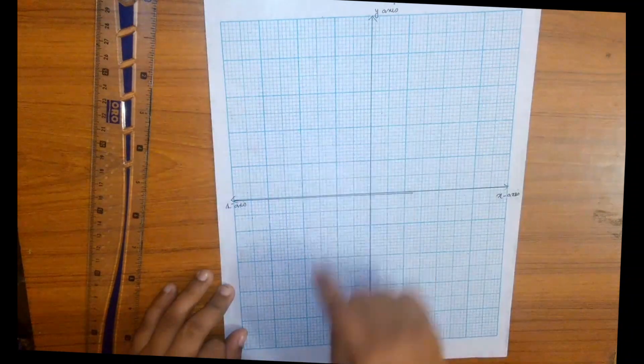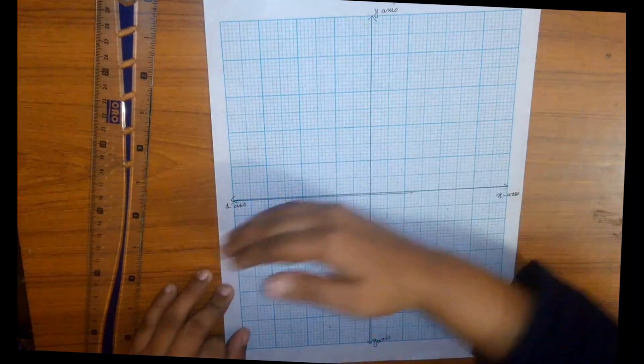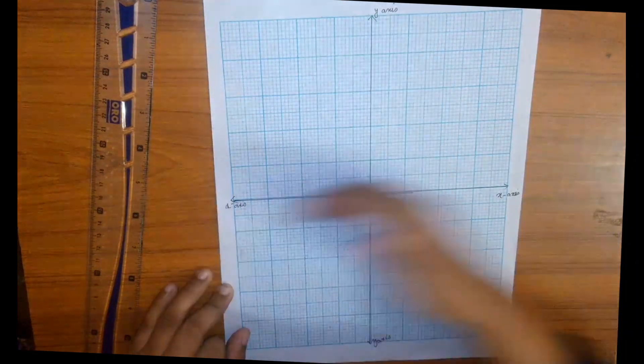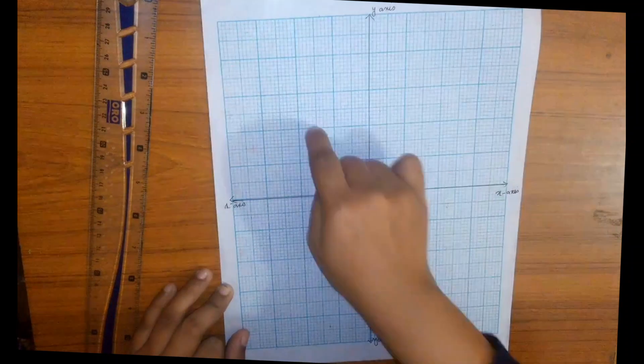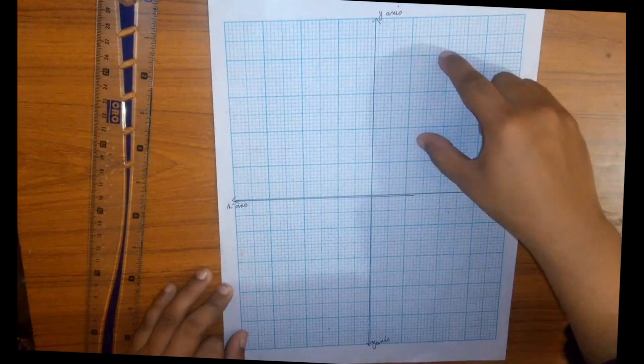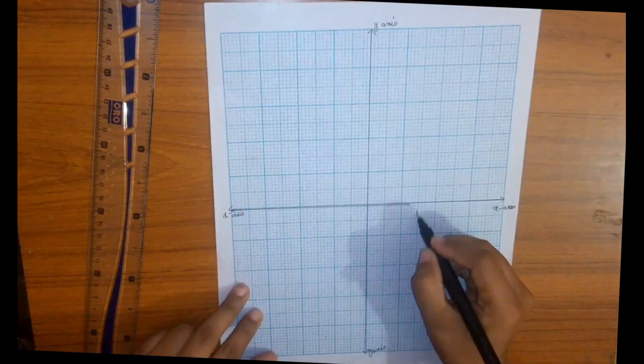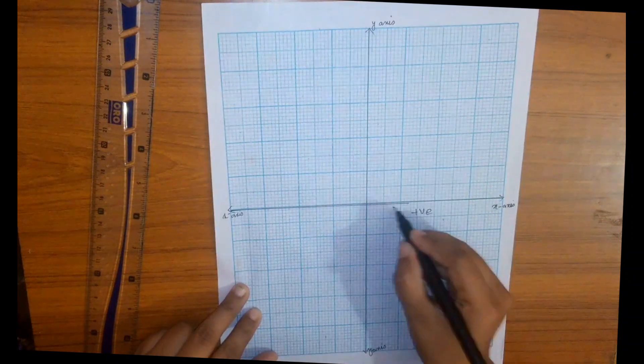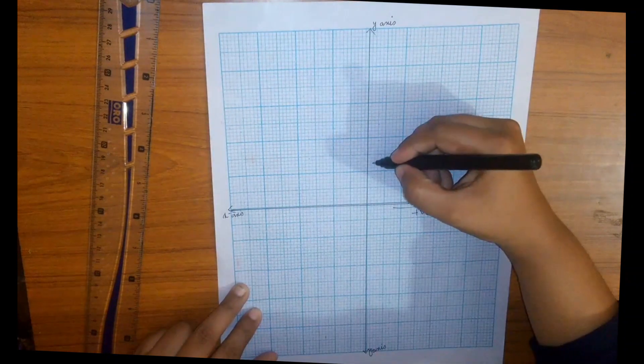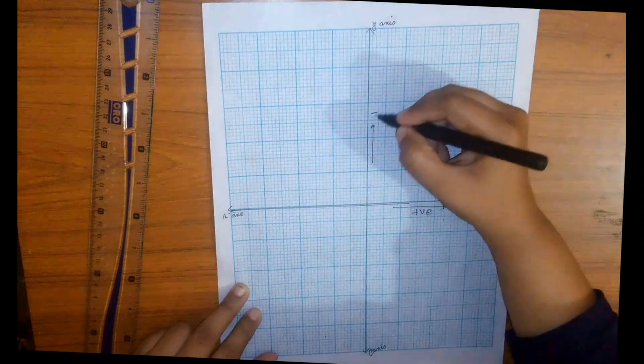Here our graph is divided into vertical and horizontal lines which make four quadrants. In this quadrant we have all positive values, which means all positive values for x and all positive values for y.